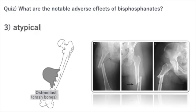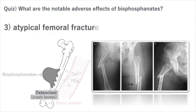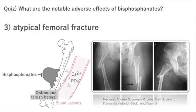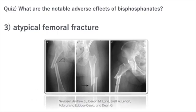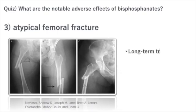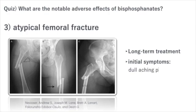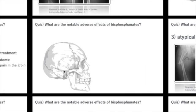Third, an atypical femoral fracture is a rare but serious adverse effect of bisphosphonates, typically occurring after more than 7 years of treatment. Initial symptoms include dull aching pain in the groin. If these symptoms appear, an x-ray is necessary for evaluation.